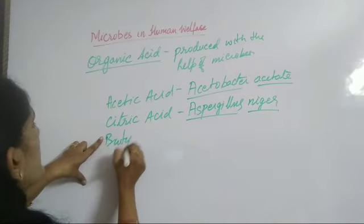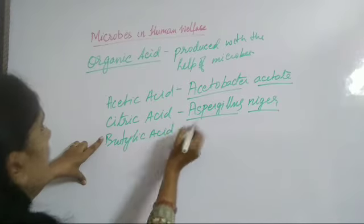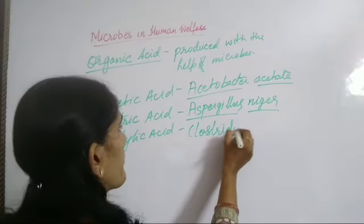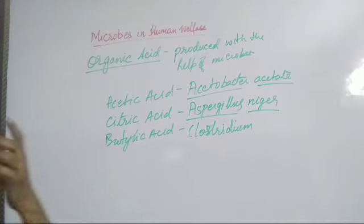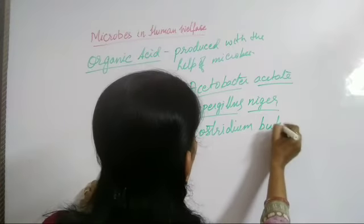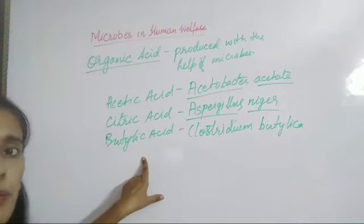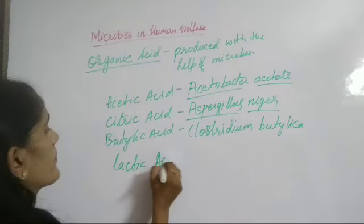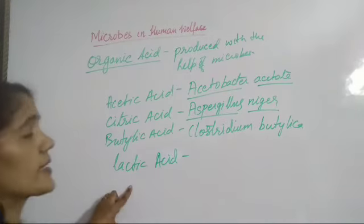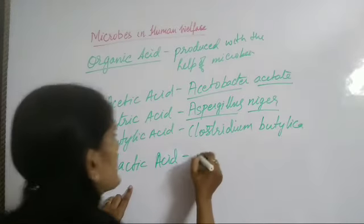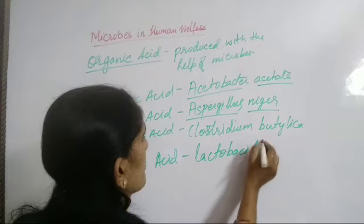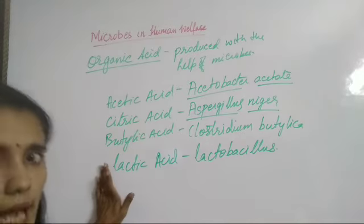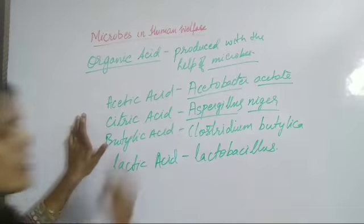Butyric acid is also produced by the bacterium Clostridium butylicum. And most commonly, everyone knows lactic acid — it is produced by Lactobacillus, which is also a bacterium. So these are some of the organic acids which are produced with the help of microbes.